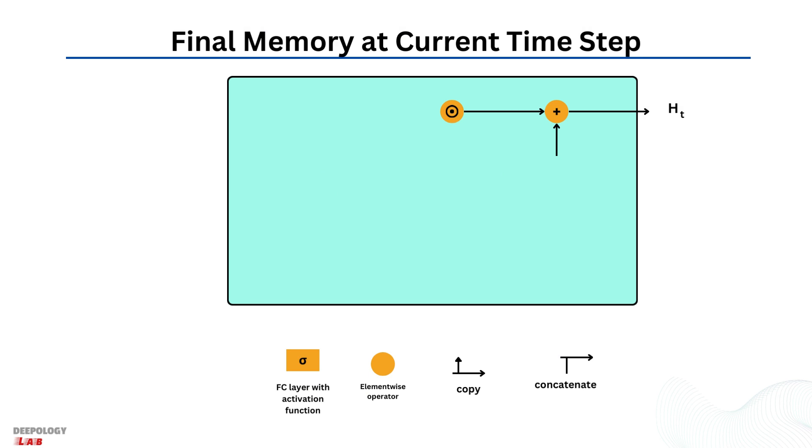As the last step, the network needs to calculate a vector which holds information for the current unit and passes it down to the network. In order to do that the update gate is needed, it determines what to collect from the current memory content and what from the previous steps. That is done as follows.